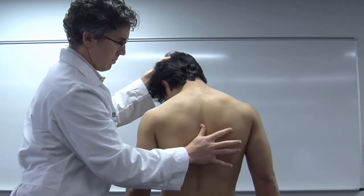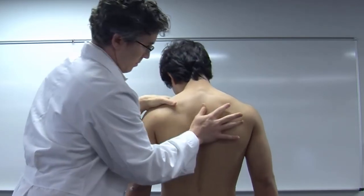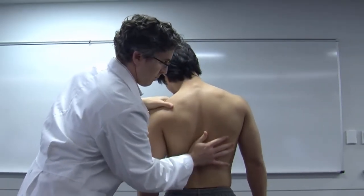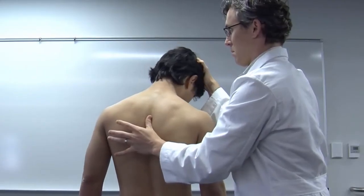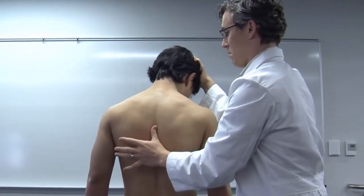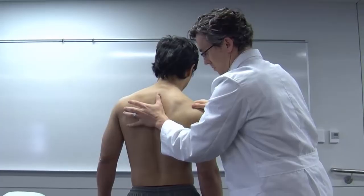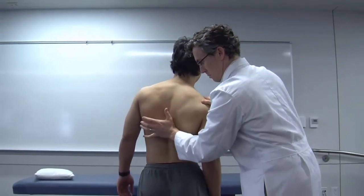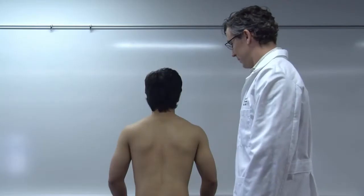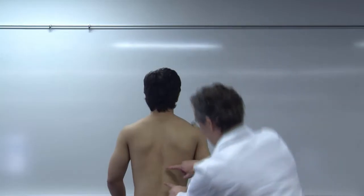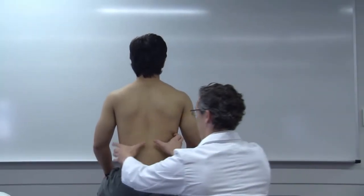If you find the area of greatest restriction in the thoracic spine during your screening exam, you want to next determine whether it's a primarily thoracic vertebrae restriction or a rib restriction. To do that, you want to compress along the facets to check for tension, and then you also want to check laterally using a compression motion to check for restriction along the rib.